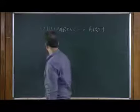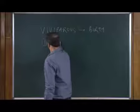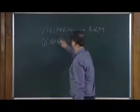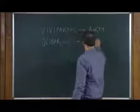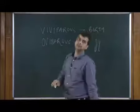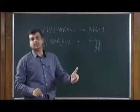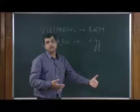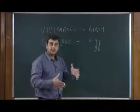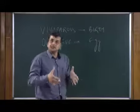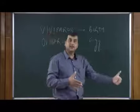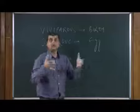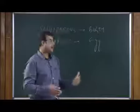The second variety are oviparous animals. Oviparous animals are the ones which lay eggs. They are egg-laying animals — they lay the eggs outside in the environment and the egg, as such, gets developed outside the body. They are not developing young ones inside the body; they are laying eggs outside, and the egg develops into young ones later on outside the body.